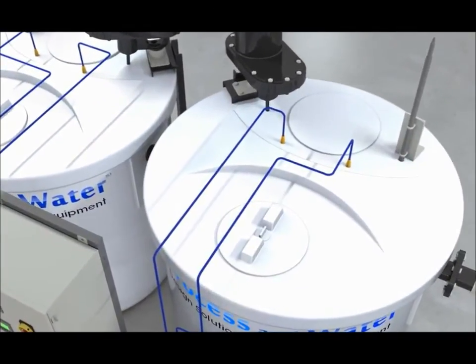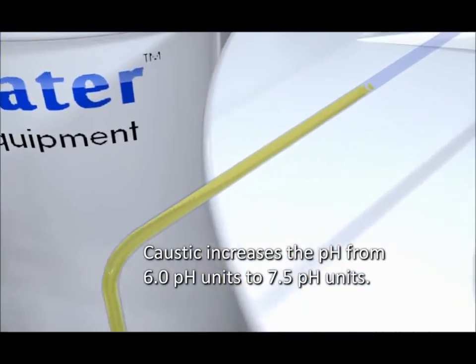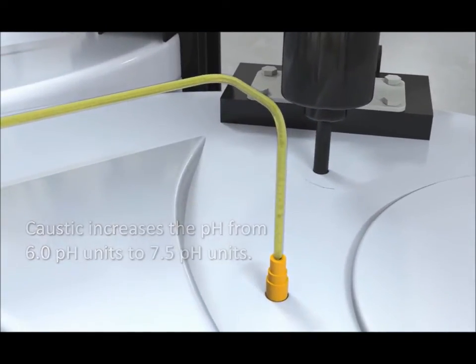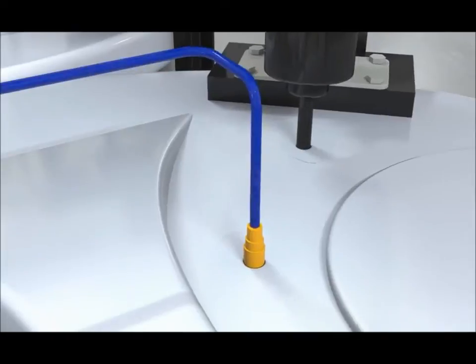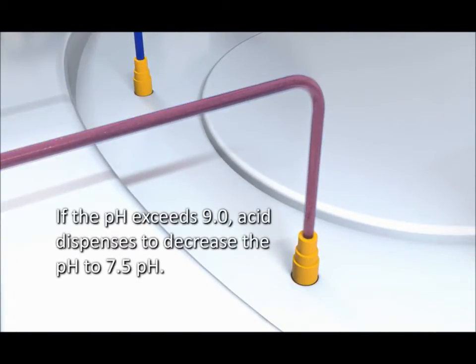The second caustic metering pump feeds the chemistry once again to increase the pH from the 6.0 pH units to 7.5 pH, and if the pH should increase more than desired to over 9.0 pH units, then the acid pump feeding this tank will feed acid to decrease the pH to 7.5 pH units.